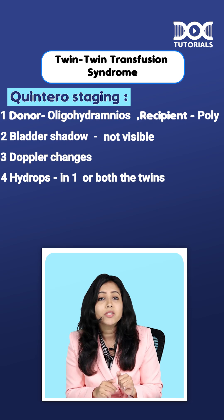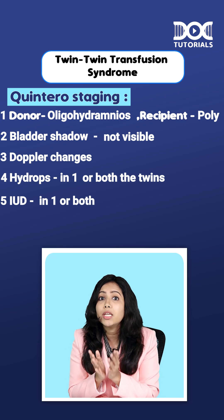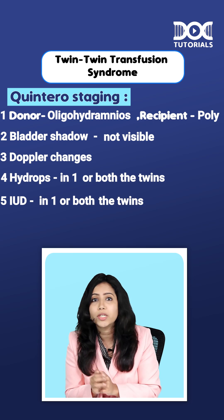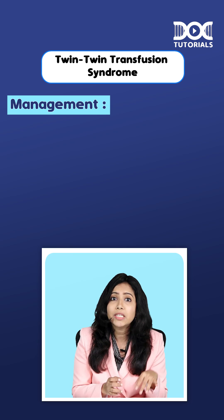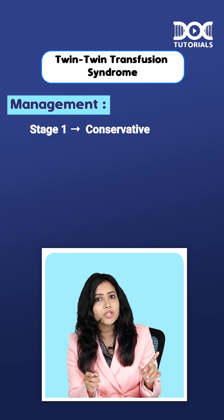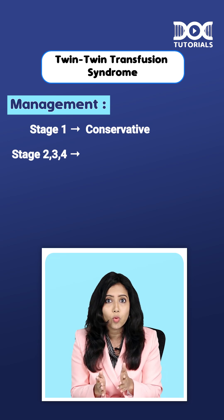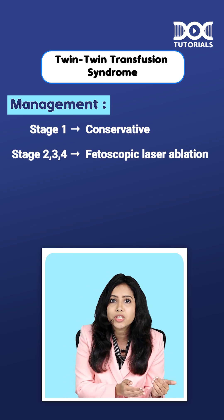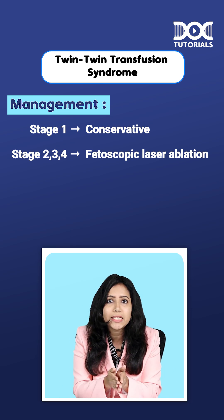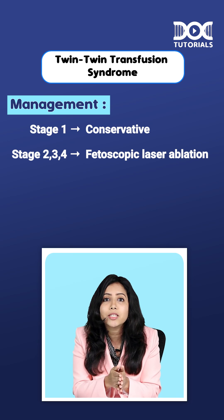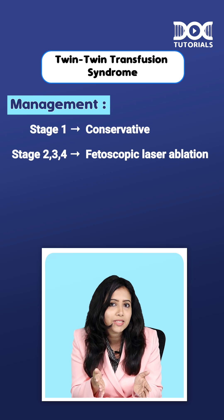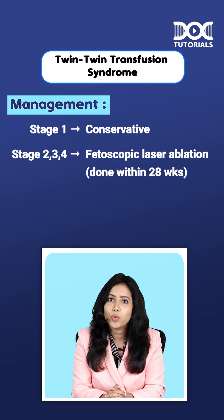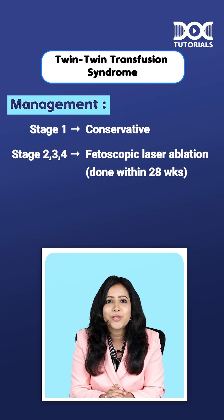Stage four: hydrops in one or both twins. Stage five: intrauterine death of one or both twins. Management: in stage one, go for conservative measures. In stages two to four, fetoscopic laser ablation is performed — ablating the connecting vessels between the twins — ideally done within 28 weeks.